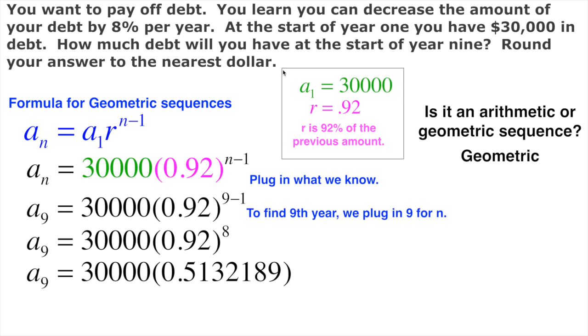Notice how I'm not rounding here. I know it asked me to round it to the nearest dollar. I'm not doing that to the very end. That way it won't throw off any of my numbers. Now I just take 30,000 and I multiply it by 0.5132189 and that gives me 15,397.